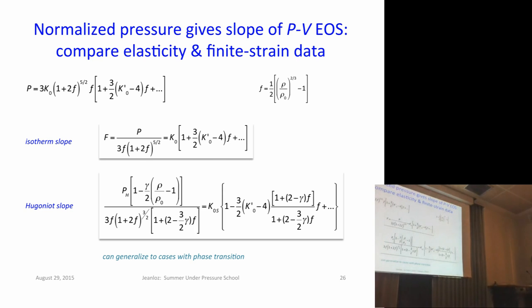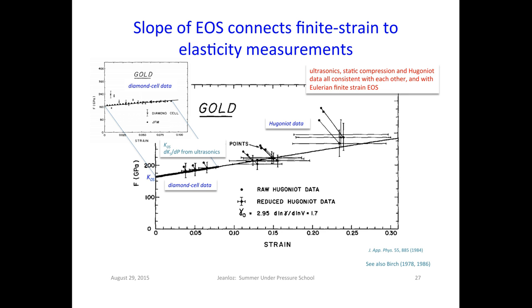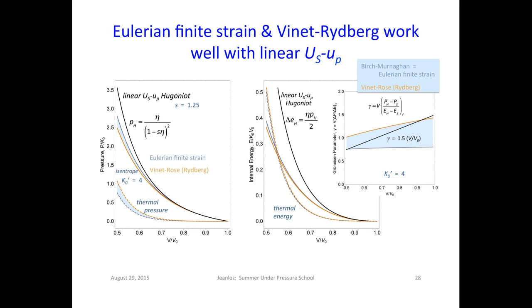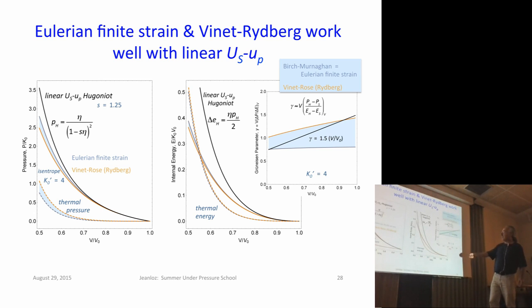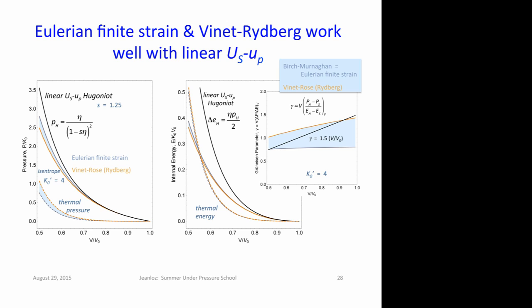What we find from these kinds of analysis is that the Eulerian finite strain Birch-Murnaghan and the Vinet-Rydberg equation of state work very well, and remarkably consistently with the linear Us-Up relation. I show Hugoniots for the linear shock velocity relation: here's the pressure, here's the internal energy versus volume. You can calculate the isentropes, the pressure, and the internal energy using these equations of state. The difference between those — shown by the dashed curves — gives the thermal pressure and the thermal energy. Dividing one by the other gives a new estimate of the Grüneisen parameter under compression.